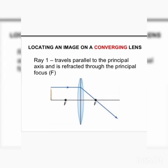Continuing with locating an image on a converging lens, Ray 1 is the first method for drawing a ray diagram. Remember that a ray diagram needs two or more rays, then we can easily detect where our image is going to be.